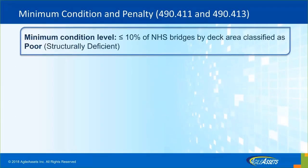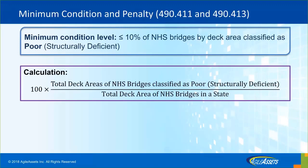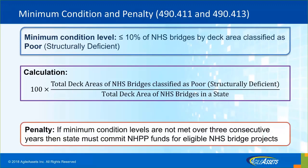Regardless of what target a state sets, there is a minimum condition level that states cannot exceed — and that is 10% of NHS bridges in poor condition. The calculation method is based on deck area: the total deck area of bridges classified as poor divided by the total deck area of all NHS bridges. That percentage should not exceed 10%. If a state cannot meet that requirement, they need to set aside a portion of National Highway Performance Program funds for only eligible bridges or projects — basically, states lose some flexibility in spending funding.